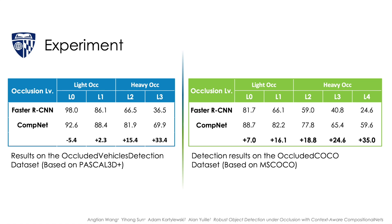By combining these into an end-to-end model, our approach is able to outperform Faster R-CNN in detecting partially occluded objects on the artificially generated occluded Pascal dataset. In addition, such robustness can be directly transferred to detecting objects under real occlusions seen in the occluded COCO dataset.